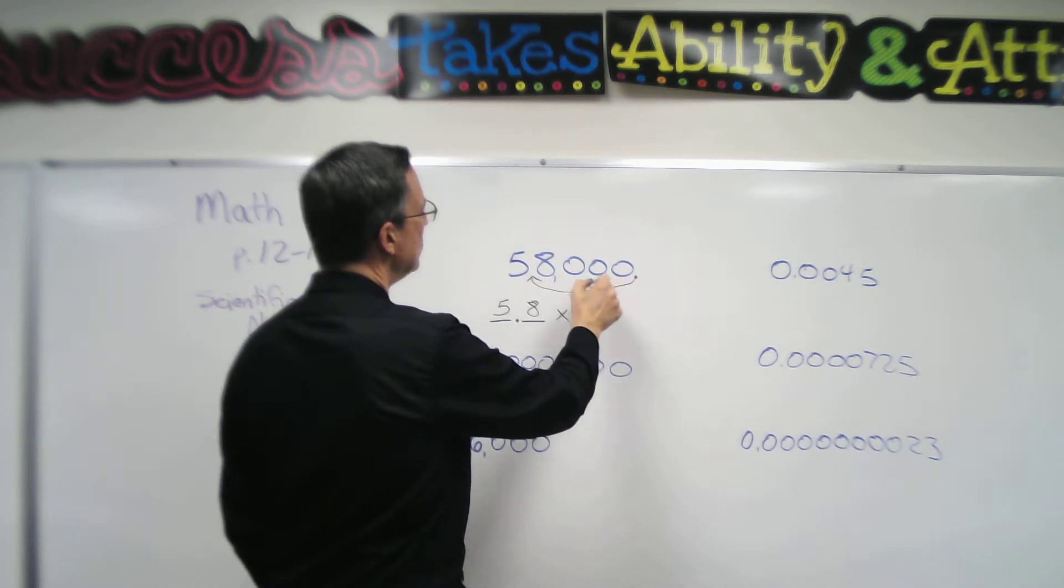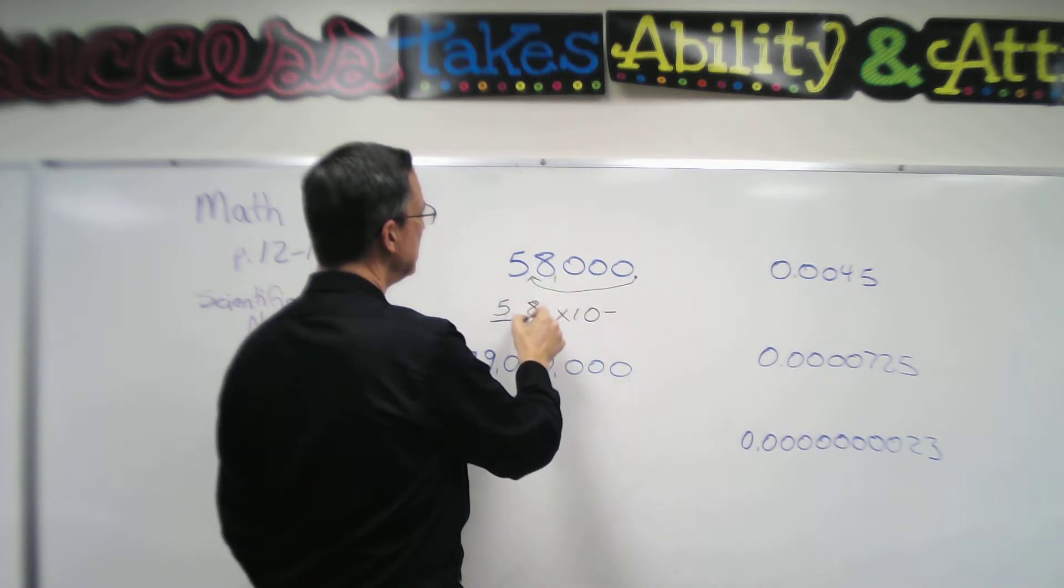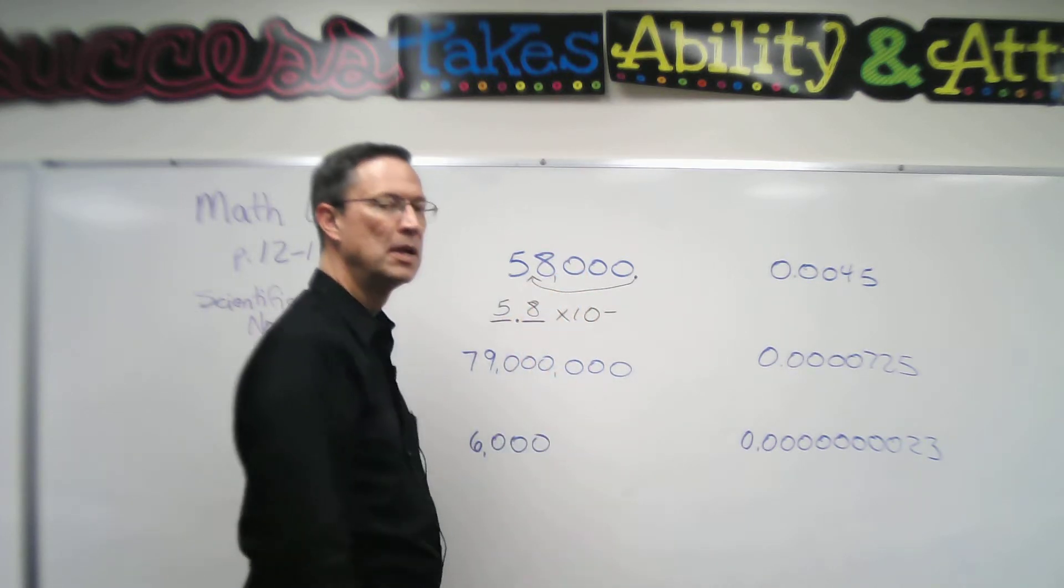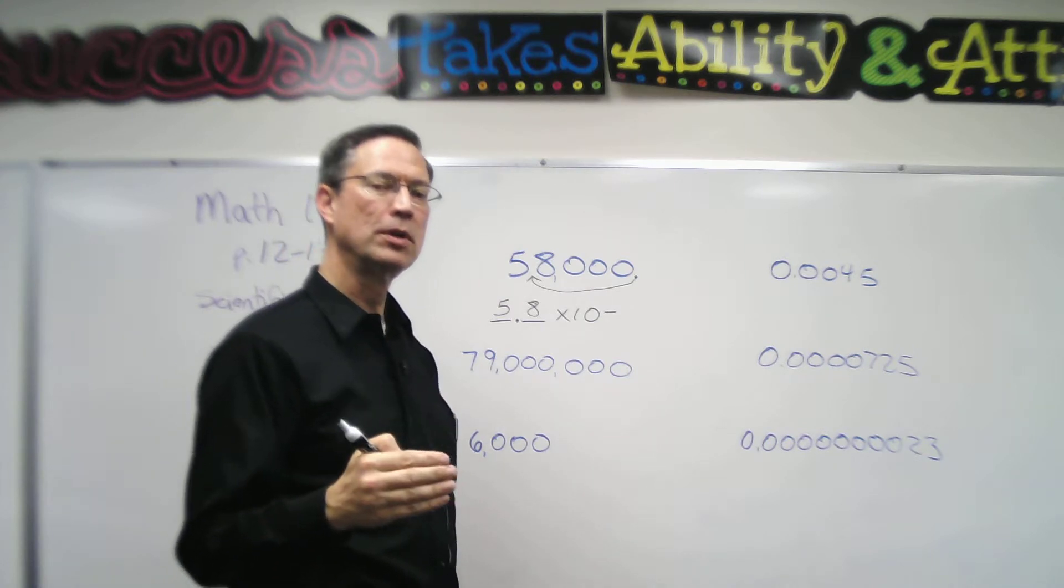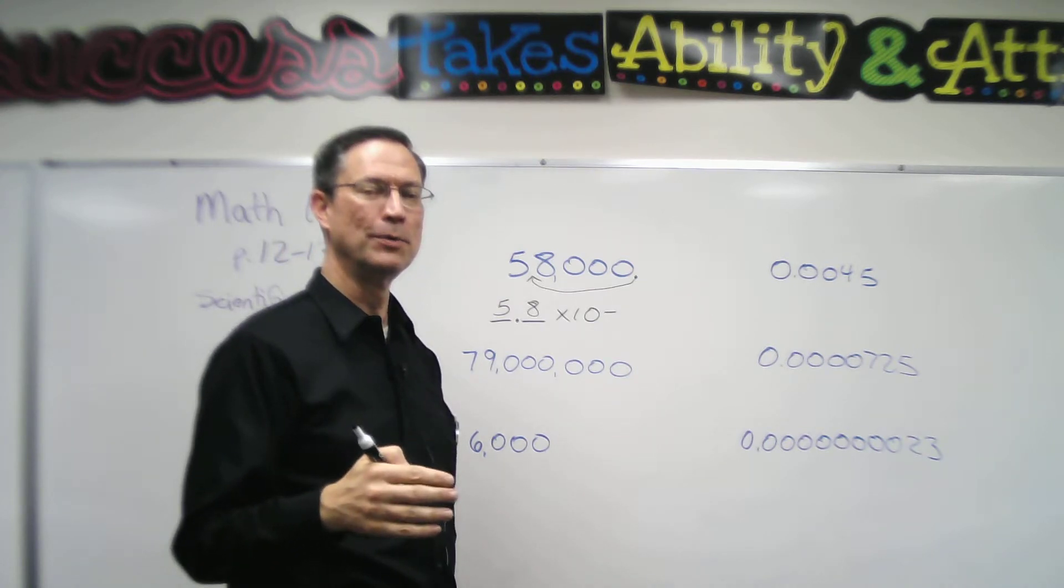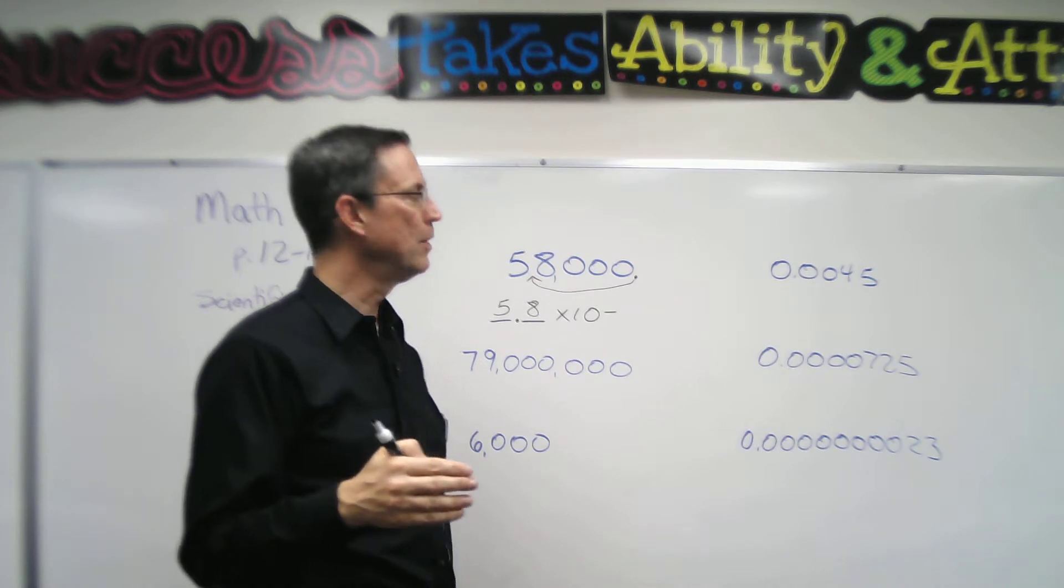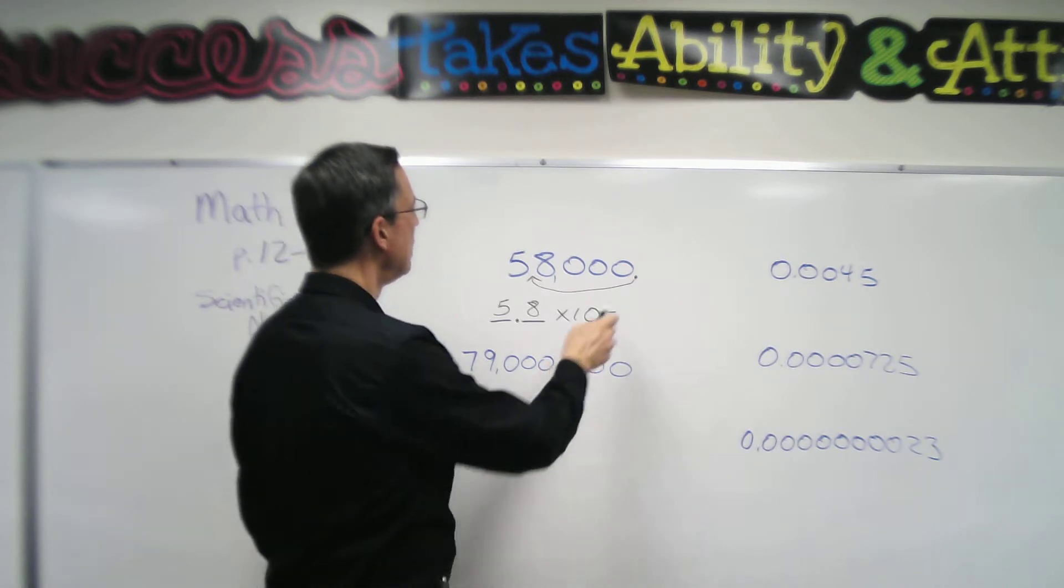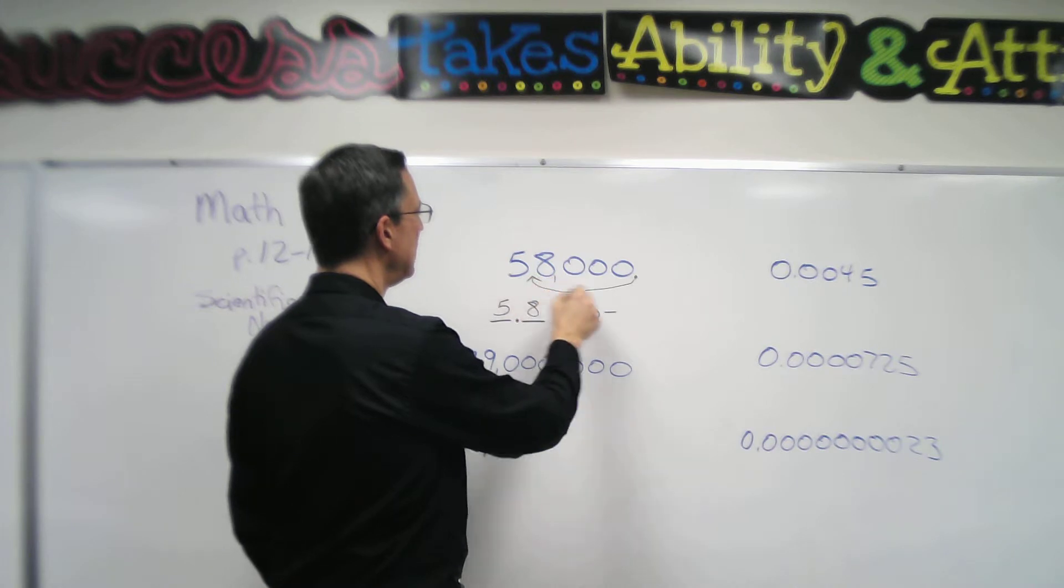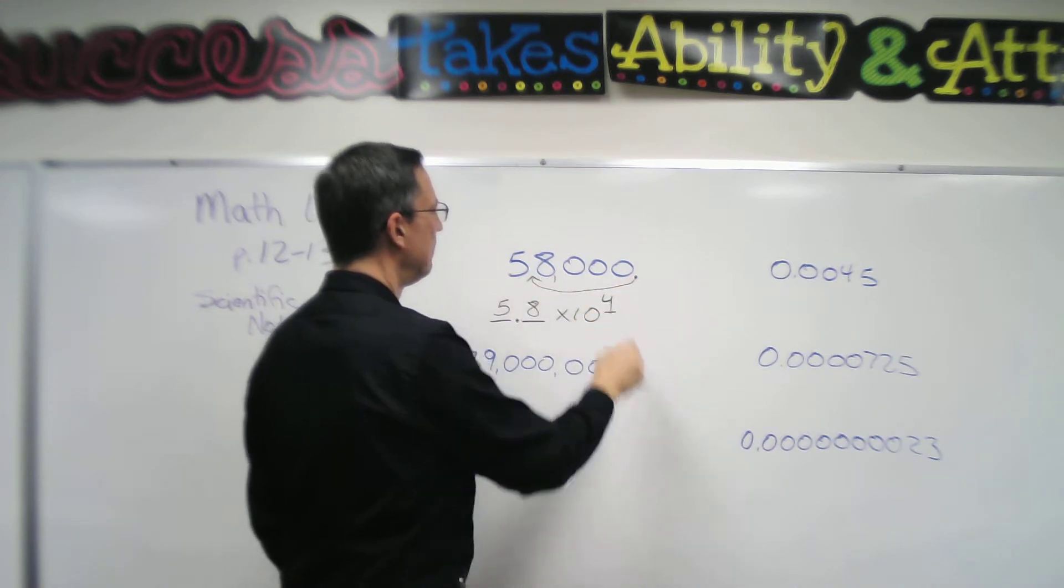Now I go back and I count. How many decimal places did I move the decimal? I moved it one, two, three, four places to get it between the five and the eight. Don't jump to the conclusion that you're counting zeros, because you'll get them all wrong if you do that. We're not just counting zeros. We are moving it all the way between the five and the eight, which is four places.